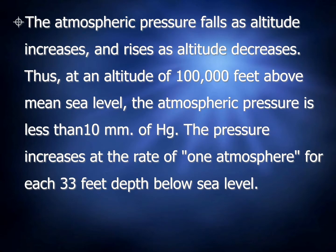The atmospheric pressure falls as altitude increases and rises as altitude decreases. At an altitude of 1 lakh feet above mean sea level, the atmospheric pressure is less than 10 mm of mercury. The pressure increases at the rate of 1 atmosphere for each 30 feet of depth below sea level.